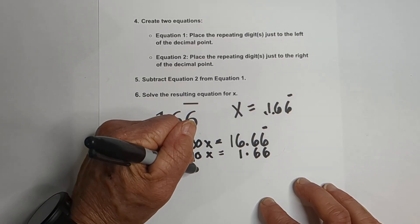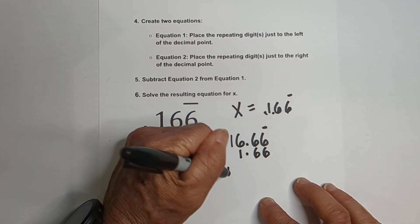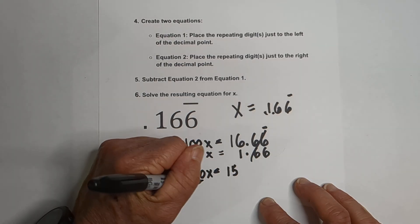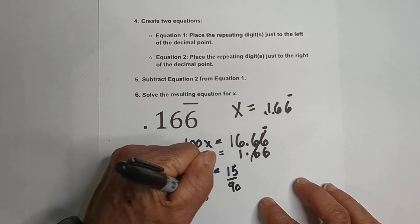So now let's subtract these two equations. 100x minus 10x is 90x equals, 16 minus 1 is 15, these cancel. Now all we do is solve for x, so we'll divide both sides by 90, 90s cancel.